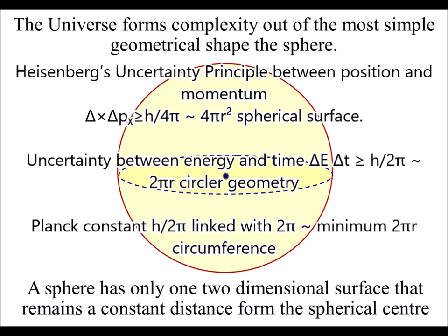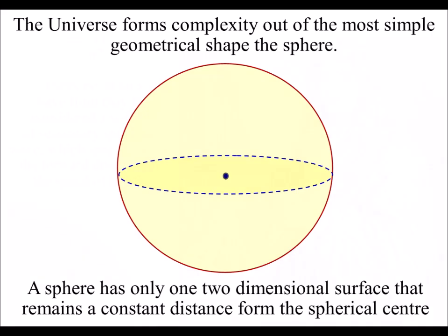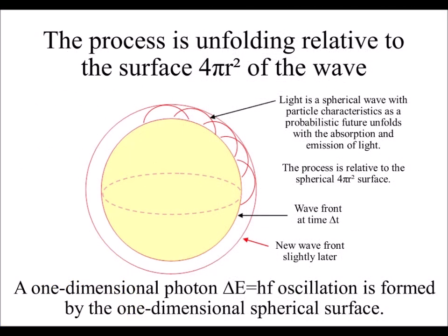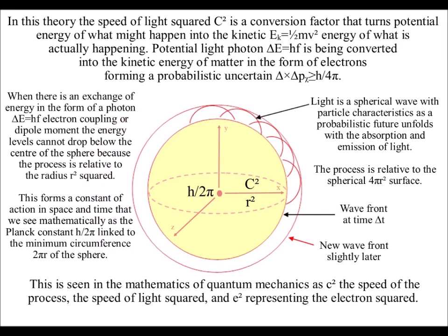The 4 pi can represent spherical geometry. This can be based on Huygens' principle of 1670, which says every point on a wave front has the potential for a new spherical wave. We can think of the point on the wave front as a photon of energy with an uncertain, probabilistic future unfolding with each photon-electron interaction. Because the process is unfolding relative to the spherical surface of the wave front, we have to square the radius — r squared.